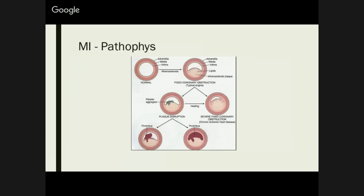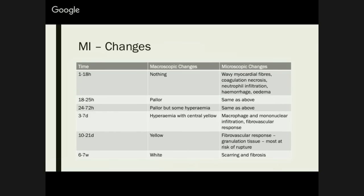Changes in an MI — macroscopic changes. Between 1 and 18 hours you basically see nothing macroscopically. After that, you can see some pallor. From 24 to 72 hours, you see some pallor but some hyperaemia coming from it. Three to seven days: hyperaemia with a central yellowing. Within three weeks it becomes just a yellow area. After six weeks it becomes white due to fibrosis. For microscopic changes: in your first couple of hours you result in coagulation necrosis, neutrophil infiltration relating back to acute inflammation. You can get haemorrhage and oedema of that tissue, and you also have wavy myocardial fibres.